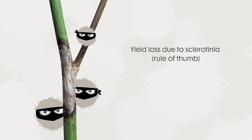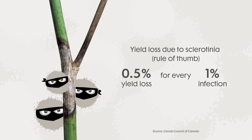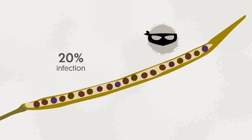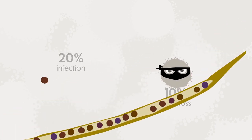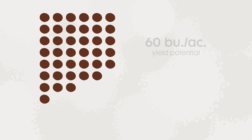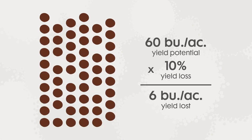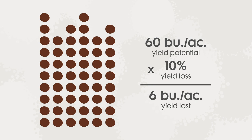The Canola Council of Canada calculates the yield loss from sclerotinia to be the percentage of disease infection times half a percent. For example, if a canola crop has 20% infection, the crop could lose 10% yield — which means if you're targeting 60 bushels per acre, count on losing six bushels due to sclerotinia stem rot.